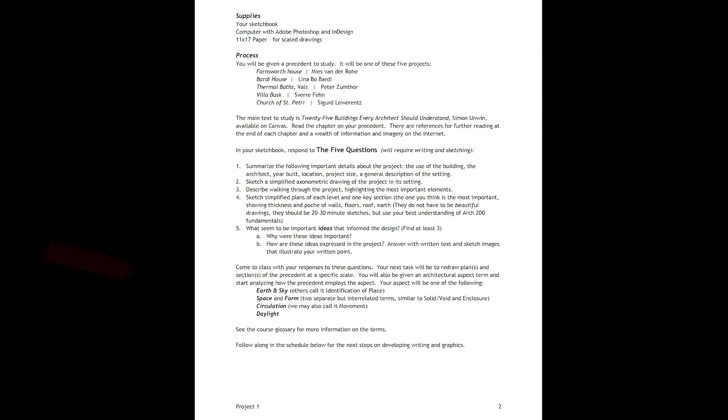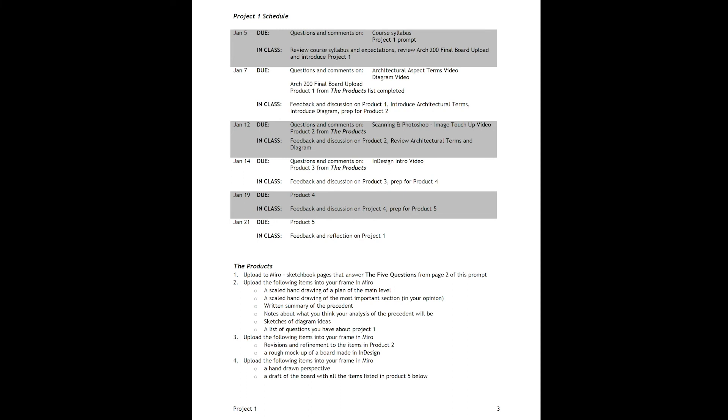In the second class, you'll be given the architectural aspect that you'll analyze. It'll be either earth and sky, space and form, circulation, or daylight. Once you have your precedent and your architectural aspect, you are now ready to start analyzing and creating a full precedent study. As you move through the project, pay attention to the schedule and the products listed in the prompt to know what is due when.